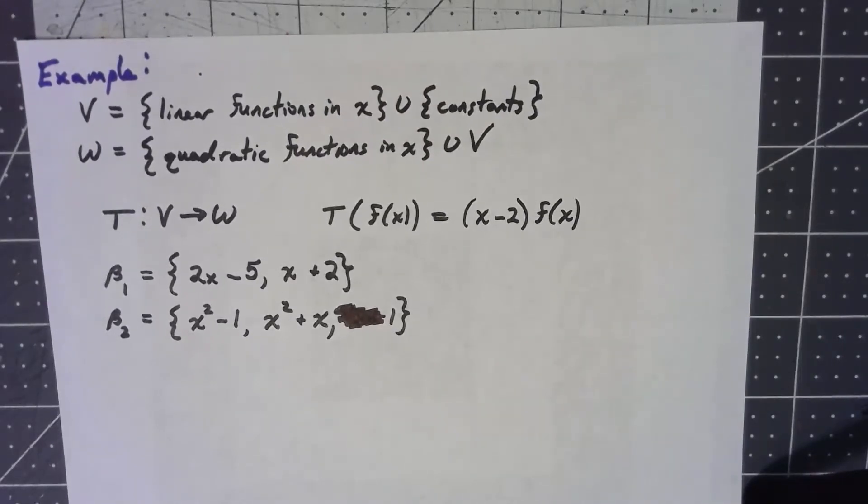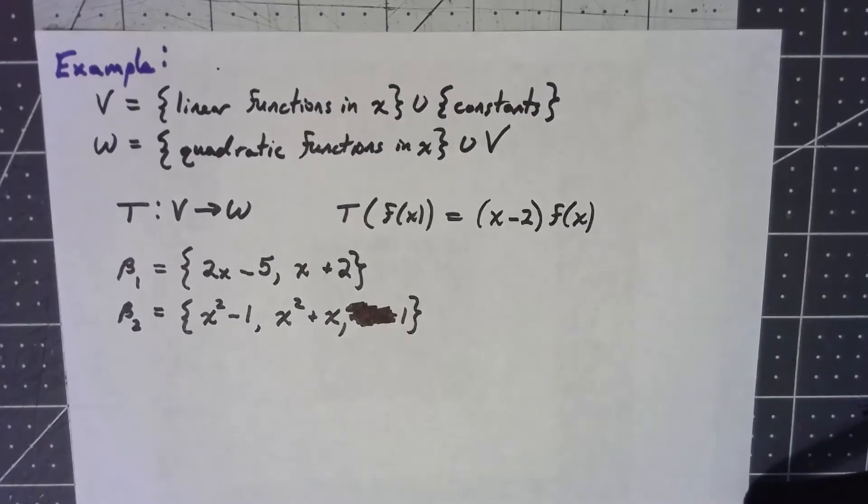Let's do an example of how this matrix for a coordinate transformation works with respect to a non-trivial linear transformation between two finite-dimensional vector spaces.